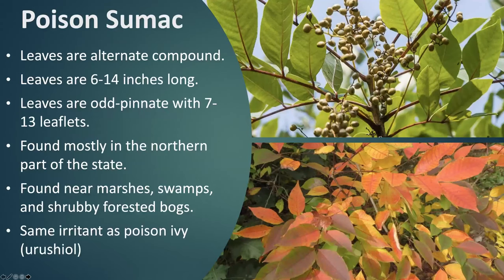Poison sumac contains the exact same chemical compound — urushiol — as poison ivy, but it's not very common in Illinois at all. You can find it in a couple of pockets mostly in the northern part of the state in very low marshes, swamps, and boggy areas. It's more of a small shrubby tree, similar in appearance to smooth sumac. If you come into contact or think you may have, wash it off as soon as you can.